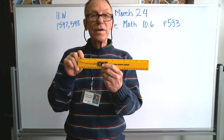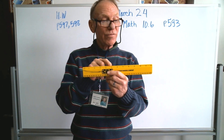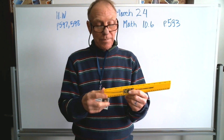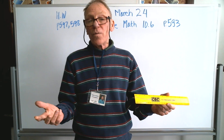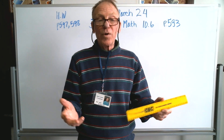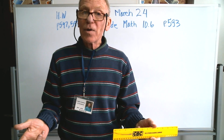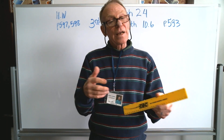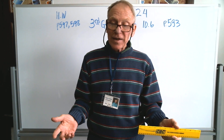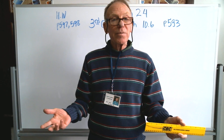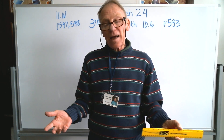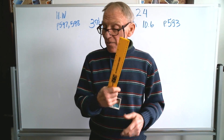A ruler is much like a number line. It starts at 1, goes to 2, goes to 3, goes to 4. It's just like a number line. So, if you want to draw a number line, put measurements on that line, collect your data by measuring things, then you can come to some conclusion about what that data actually might mean.